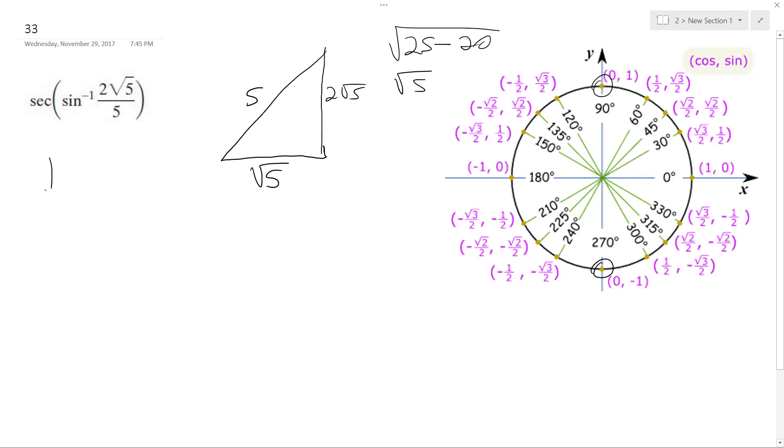Okay, so we need the secant, which is 1 over cosine. So it's 1 over square root of 5 over 5, which gives us 5 divided by the square root of 5. This is the same as root 5 times root 5 over root 5. One of these cancels out, and we're left with root 5.